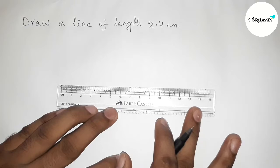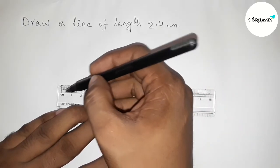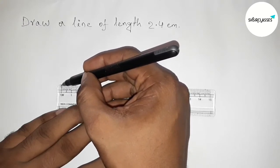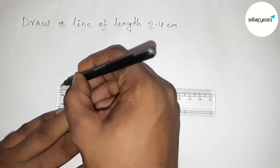So putting the scale by this way and first counting the length 2.4 centimeter. So this is the starting zero, so first marking the zero here. And this is starting zero.